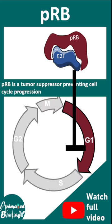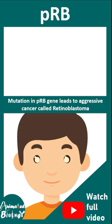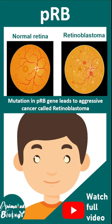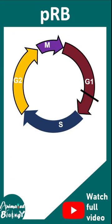PRB, when mutated, leads to a severe form of retinal cancer known as retinoblastoma. PRB acts at a particular time point known as the restriction point in the G1 phase of the cell cycle.